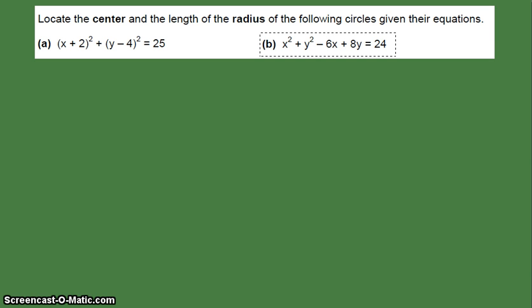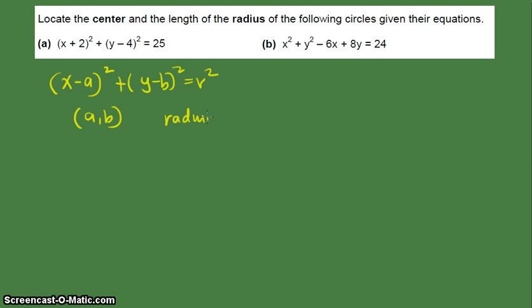x plus 2 squared plus y minus 4 squared is equal to 25. This should be straightforward because we know that the standard form of a circle is x minus a squared plus y minus b squared is equal to r squared. And in this form, we can easily identify the center and that is (a, b), so the number a and the number b. And the radius is the value of r. So this is r.